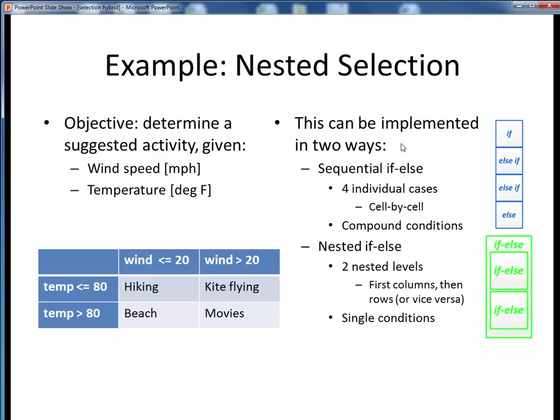As is so often the case in programming, there's more than one way to solve this problem. One way would be to use sequential if-else logic, as shown schematically here. We could check for individual cases cell by cell until we found the right combination, and to do this we'd need to check compound conditions. For example, if the wind speed was less than or equal to 20 and the temperature was above 80, our program should suggest going to the beach.